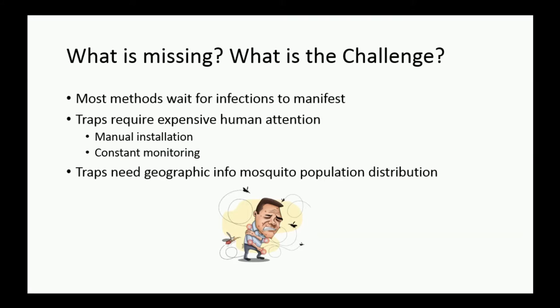So in all these traps, what's missing? Most methods wait for the disease to manifest — even in Singapore, they waited for four or five people to get infected with Zika before putting out traps. Traps require a lot of manual installation and monitoring. You need to collect the traps, see what mosquitoes were trapped, see what other insects were trapped. And apart from this, you also need geographic data — which areas have more mosquitoes and where to install more traps. These challenges are not clearly addressed by existing solutions.